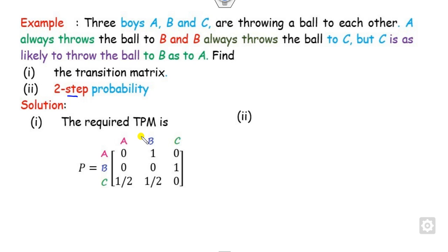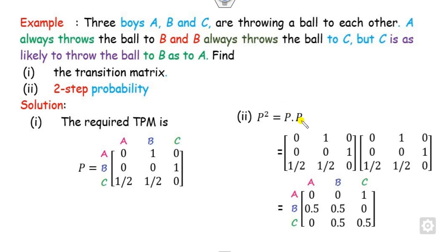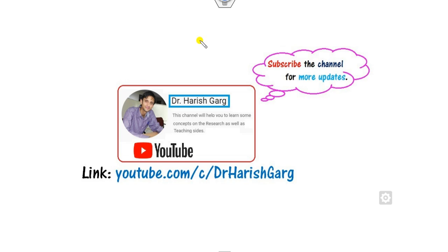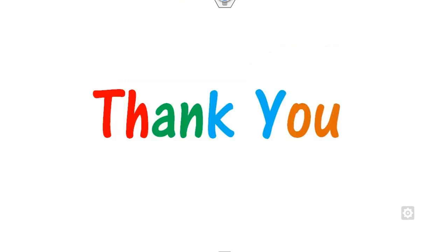Another example demonstrates computing the two-step transition probability for a multi-state chain with states A, B, C — the same example discussed in previous videos. We compute P^2 = P × P to obtain the two-step transition probabilities for all states. This is how you can solve Chapman-Kolmogorov equations in a simple and efficient manner. I hope you enjoyed this session; if you have doubts, feel free to ask or follow the channel link for more videos.